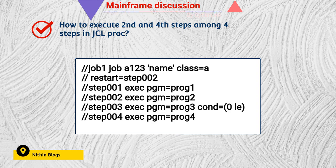The COND parameter is set to COND equal to zero, less than or equal to zero. So if step two executes successfully, step three will be bypassed and it will automatically move to step four. So step two and step four will execute, step three will be bypassed, and step one won't start because we are using the RESTART function in the job card.